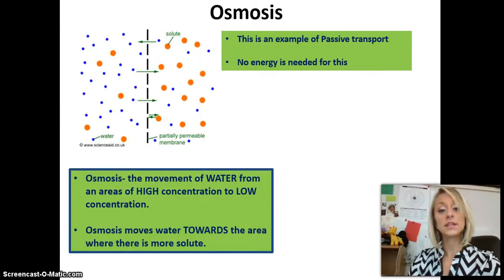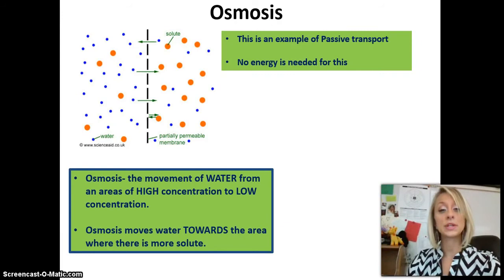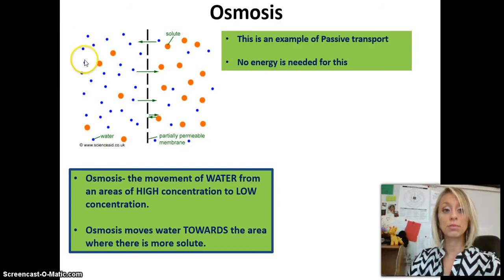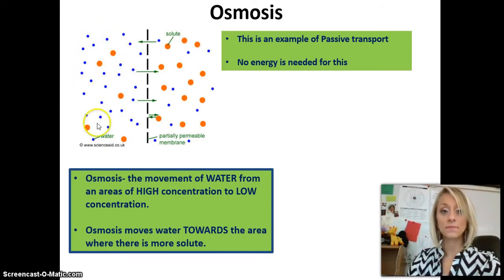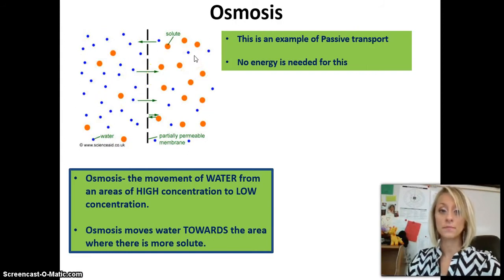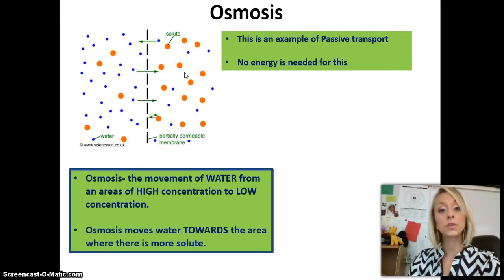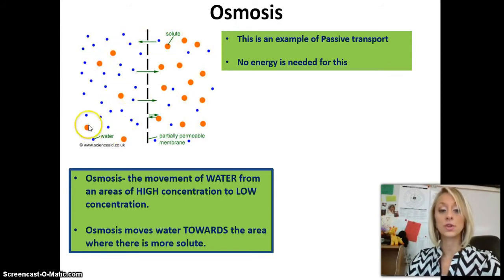The next example is osmosis. Osmosis is another example of passive transport, meaning no ATP is needed. The only difference between osmosis and diffusion is that osmosis deals only with water molecules. The blue dots are water molecules — there's a high concentration of them on the left, so they're going to move towards the right where there's a low concentration. The orange dots are solute molecules, not water, and there's a high concentration on the right, so they will move towards the left where there is a low concentration.